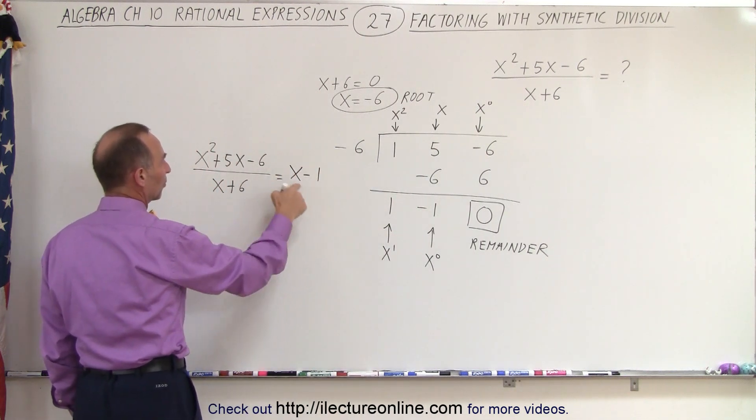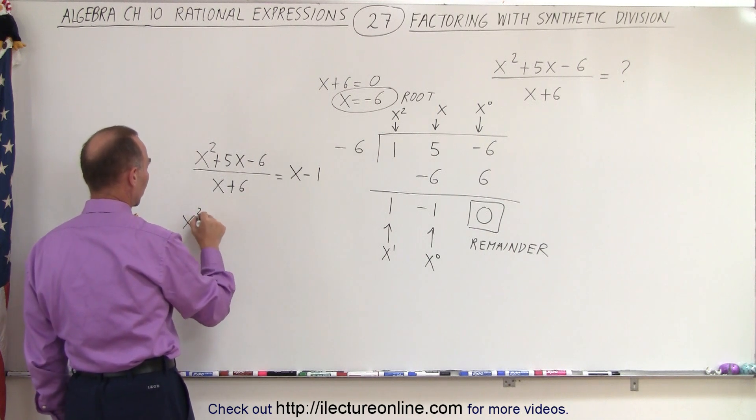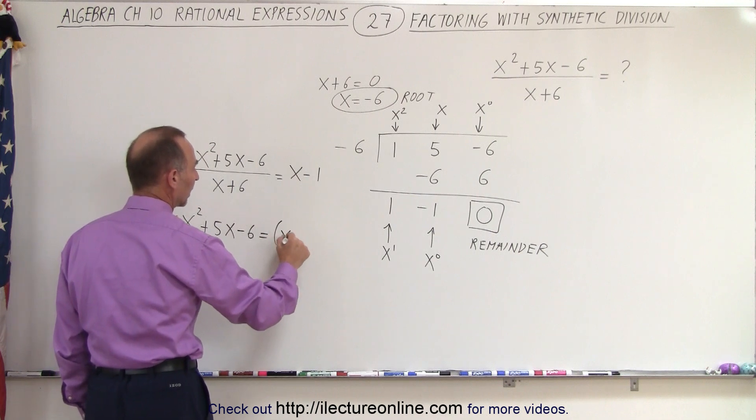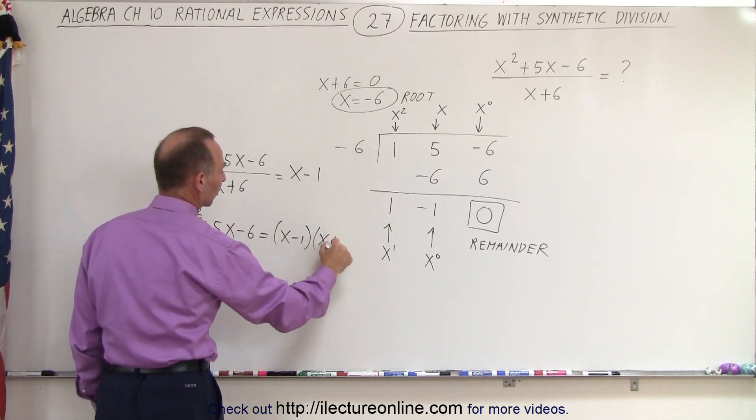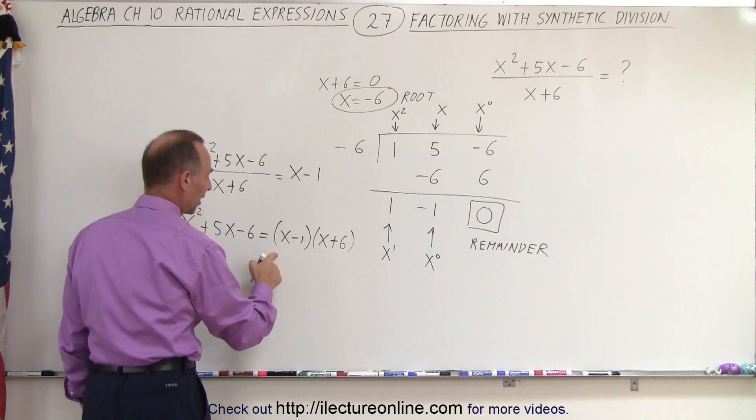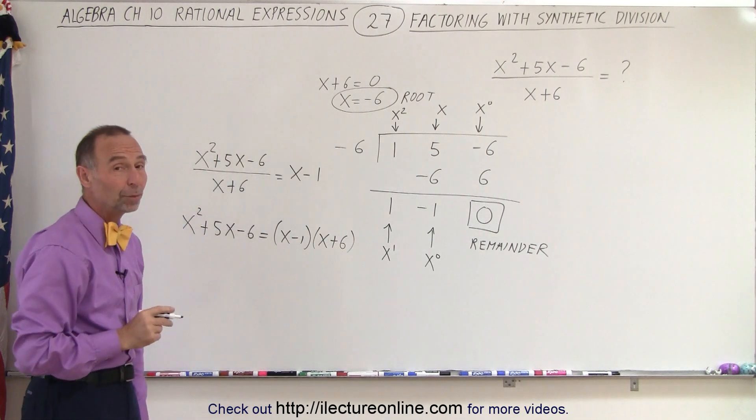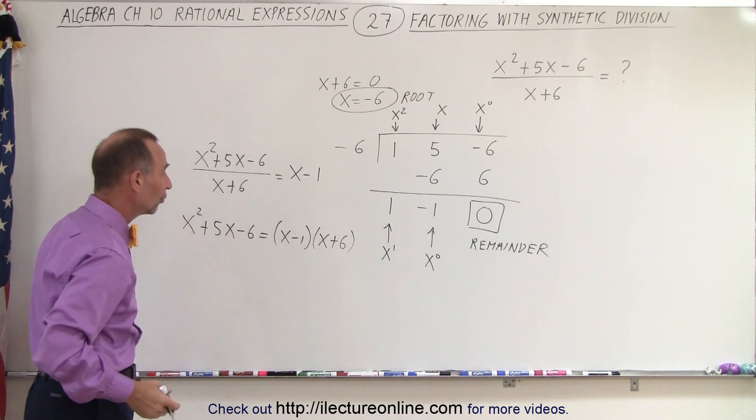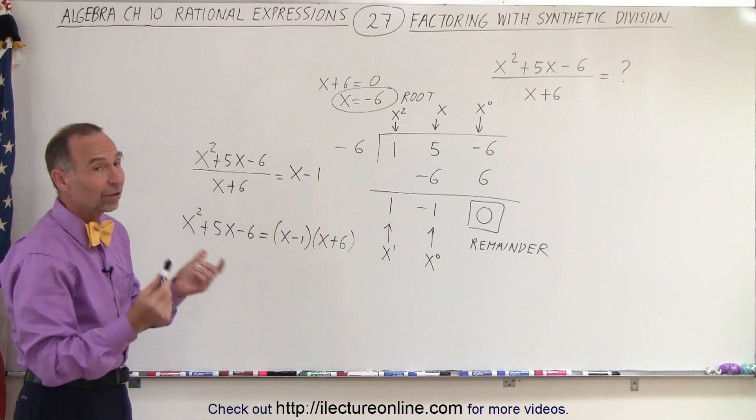And then if we cross multiply, we can say that x squared plus 5x minus 6 is equal to the quantity x minus 1 times the quantity x plus 6, which is the factored form of this trinomial. And that's why we can use synthetic division to also factor once you know one of the factors.